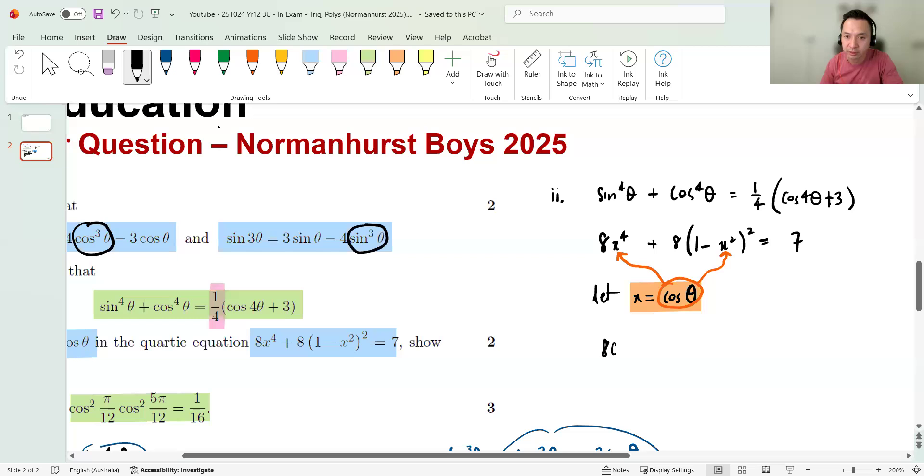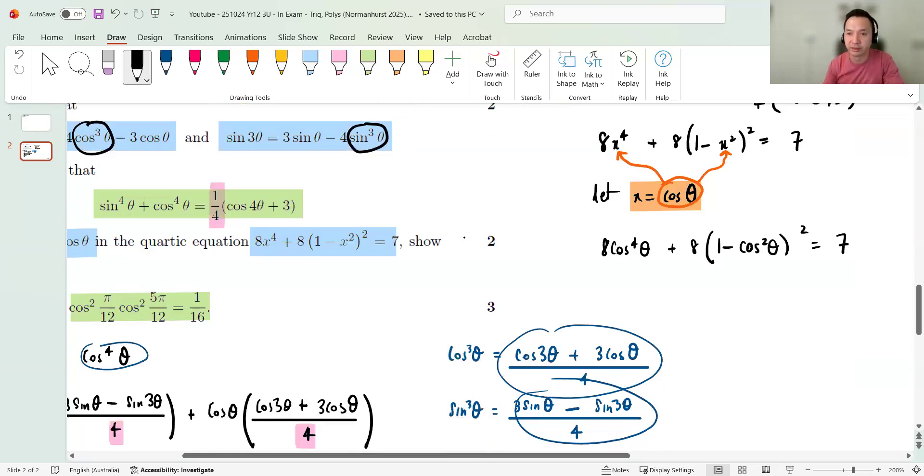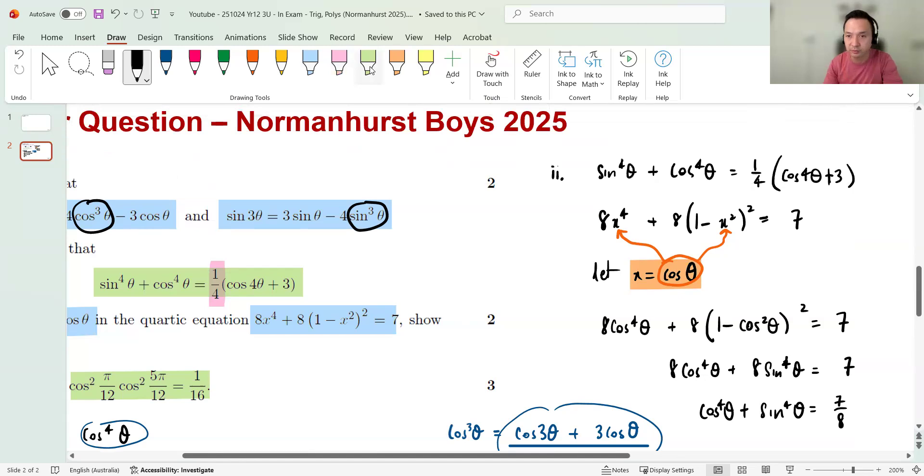Plus eight, one minus x squared squared equals to a quarter. Okay, I'm just going to sub this, guys. Sub this into the values of x. All right. Just to see where that takes me. So that's eight cos four theta plus eight, one minus cos squared theta, squared, equals seven. Okay. I know that that is sine squared. So that's like eight cos four theta. That's sine squared squared. So that's eight cos. So that's sine, squared, no, four now, theta equals seven. Here's a cos four theta plus sine four theta, seven on eight. Okay.